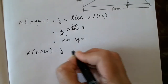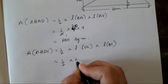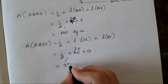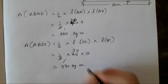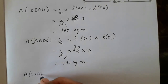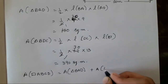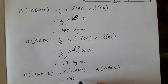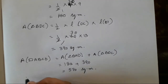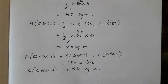Now area of triangle BDC = ½ × DC × BT = ½ × 60 × 13. Reducing: 30 × 13 = 390 square meters. Adding both areas: area of BAD + area of BDC = 180 + 390 = 570 square meters. Therefore, area of quadrilateral ABCD = 570 square meters. I hope this exercise is clear to everyone. See you in the next video, take care, bye!